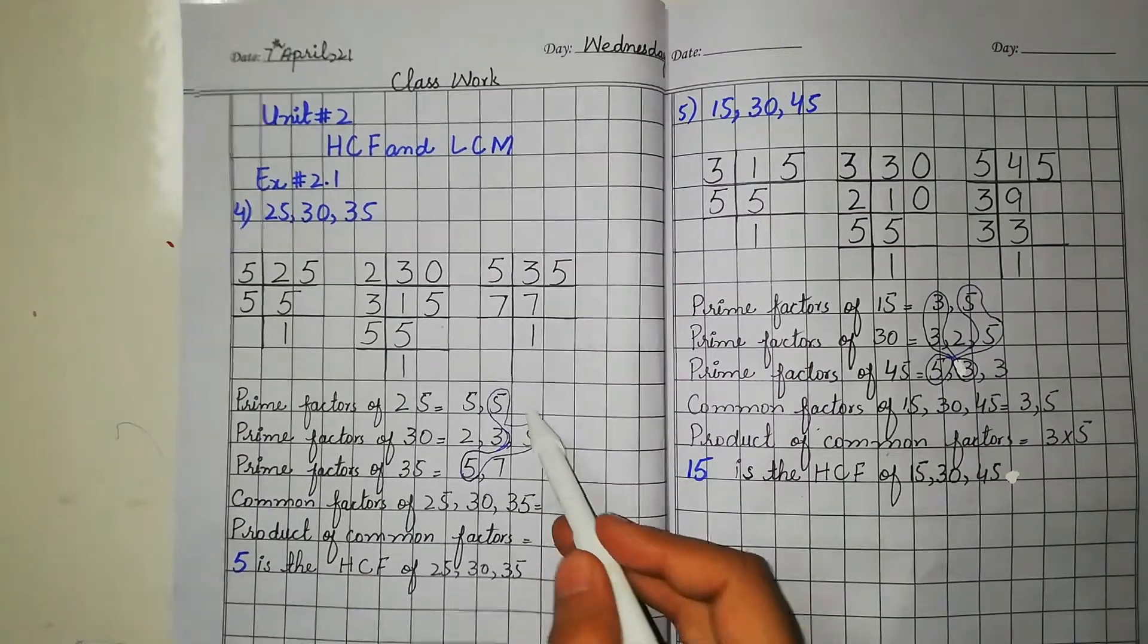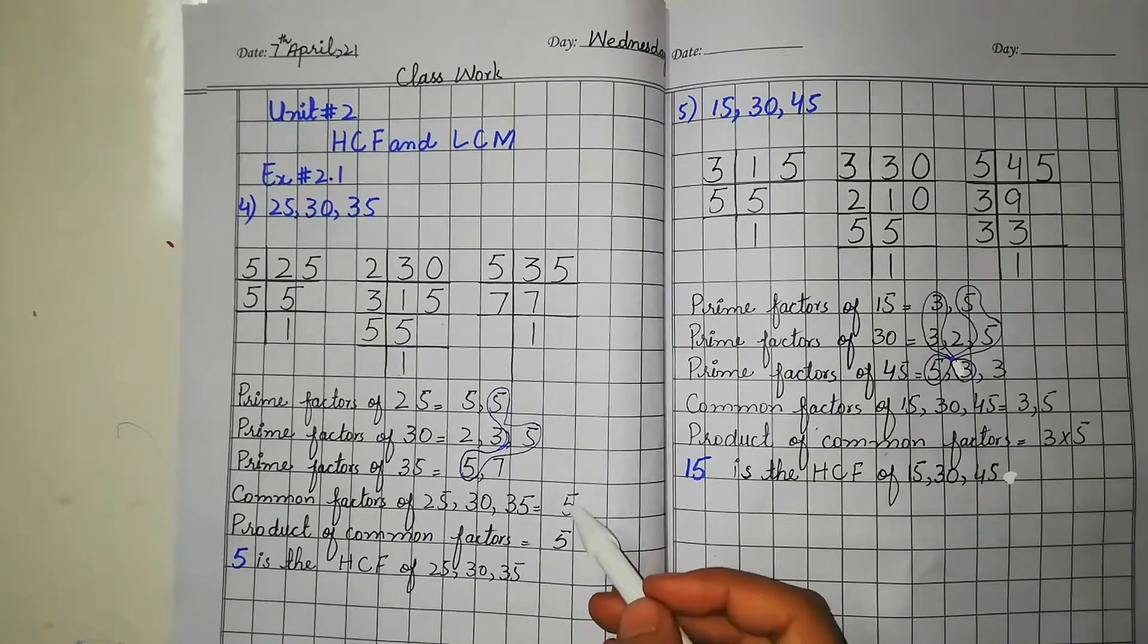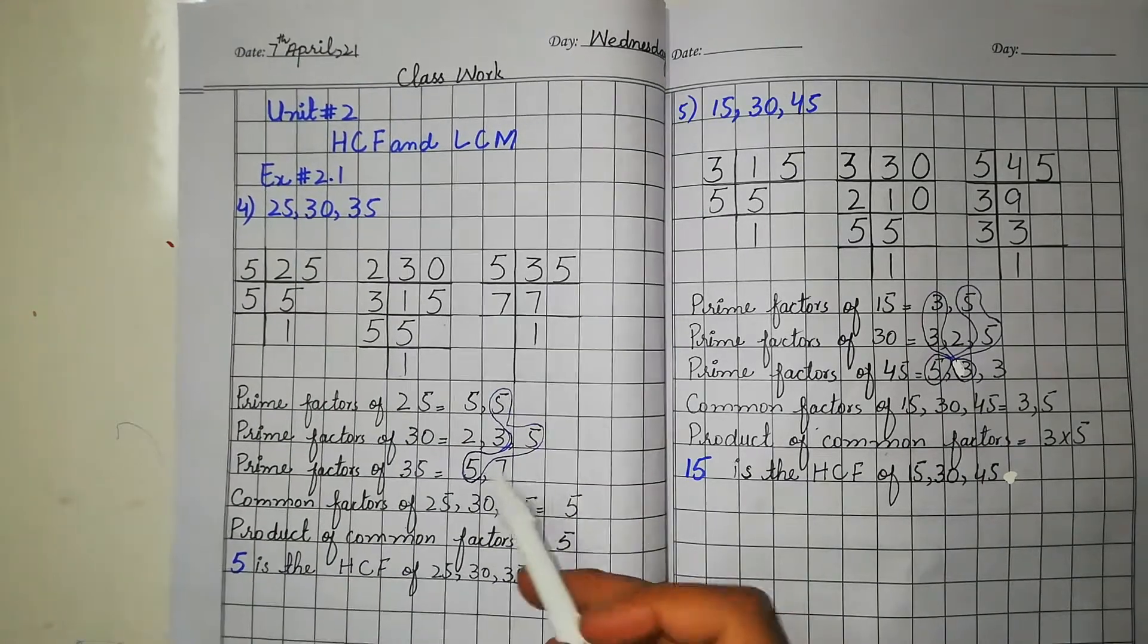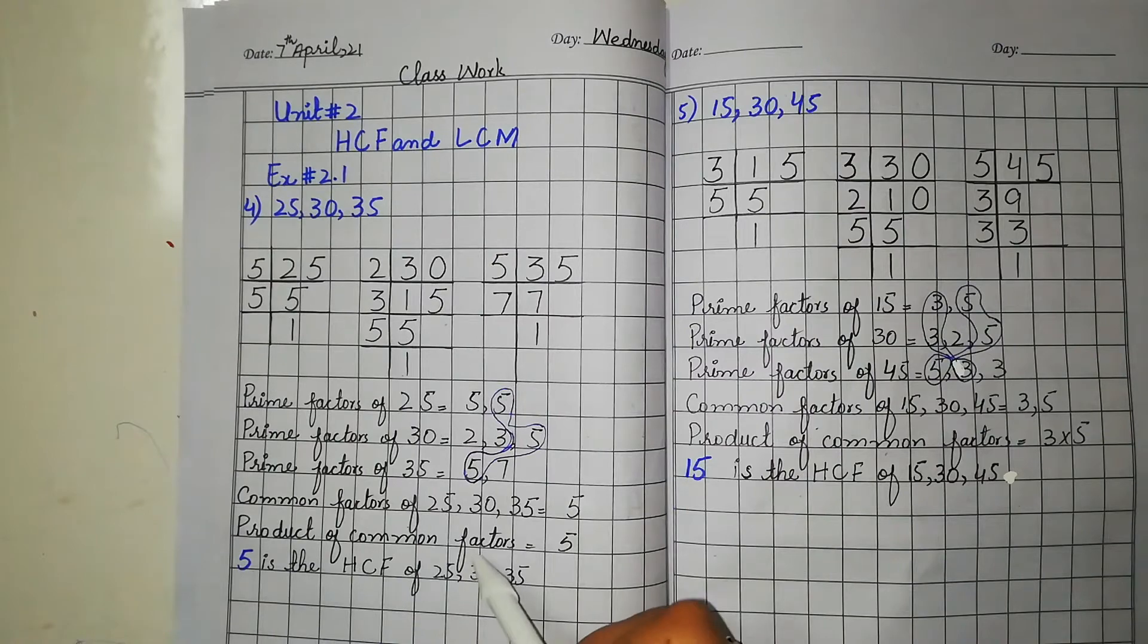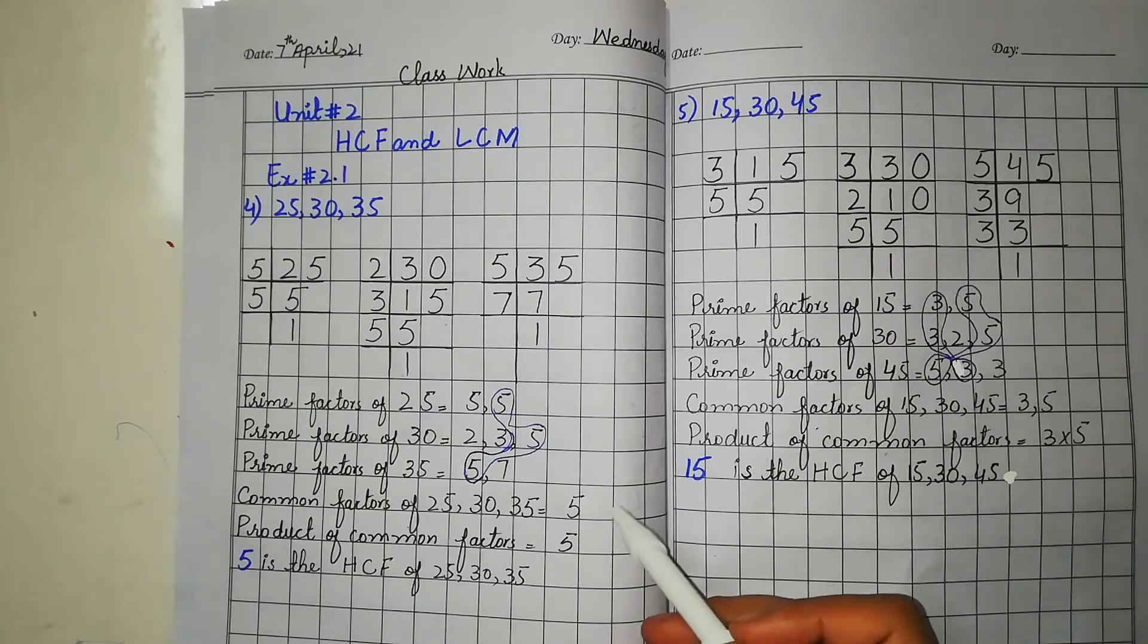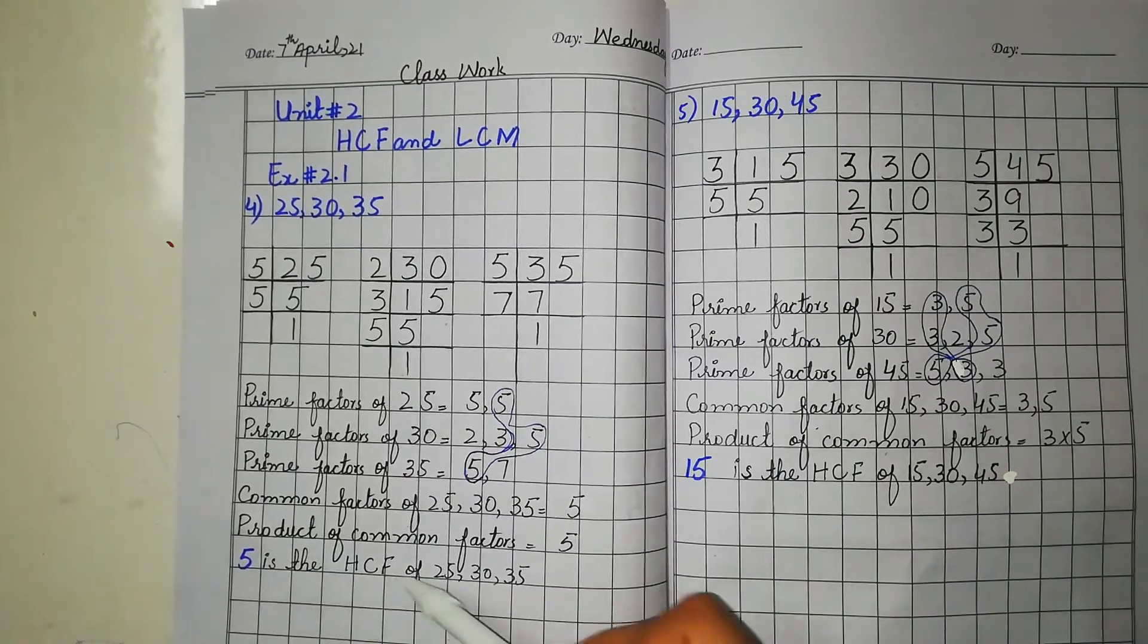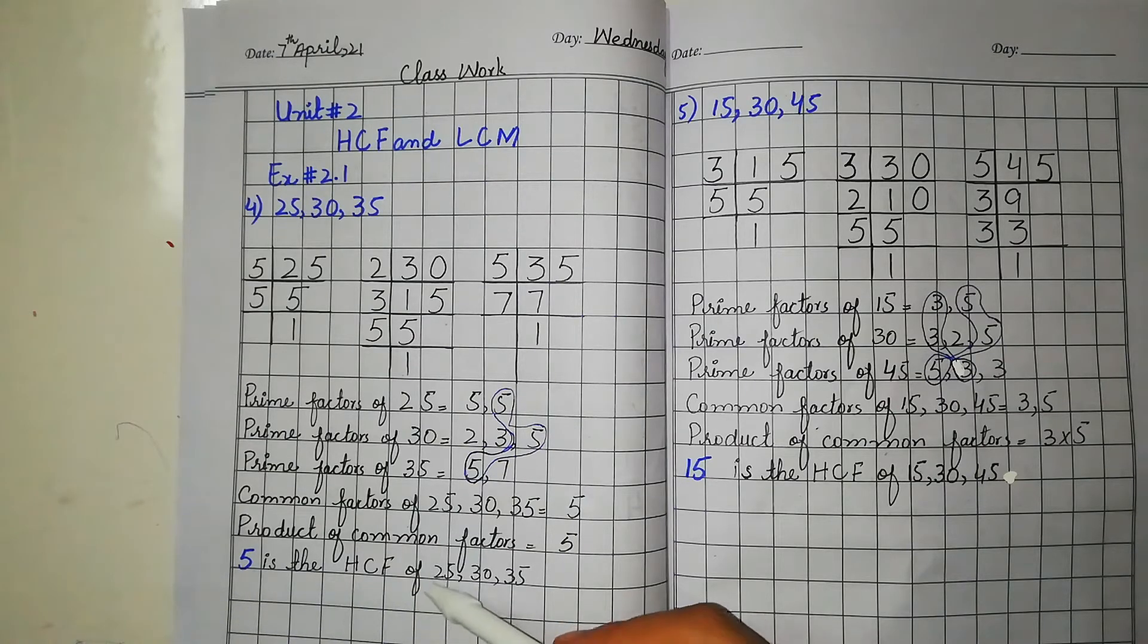Now in this question, the common factor we have is 5, because here the common factor is only 5. Product of common factors is also 5. If there is another common factor with this, we multiply it and write the answer here. The HCF here is 5. So 5 is the HCF of 25, 30, and 35.